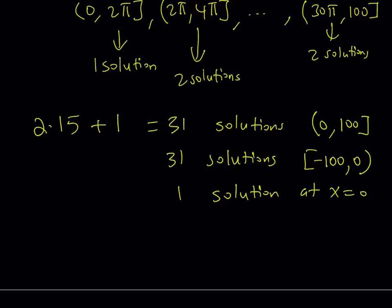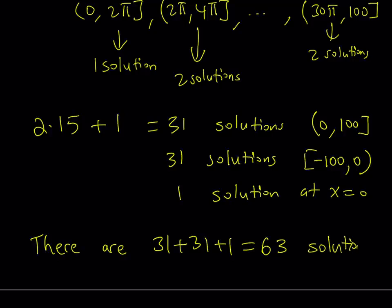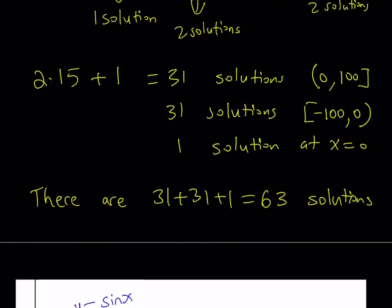And that gives us what? The total number of solutions. There are 31 plus 31 plus 1, which is equal to 63 solutions to the equation sine x equals x over 100.